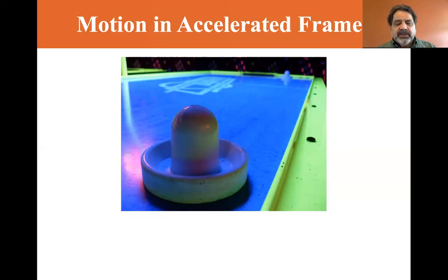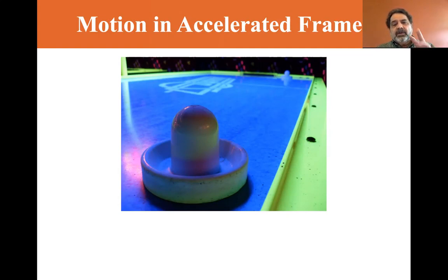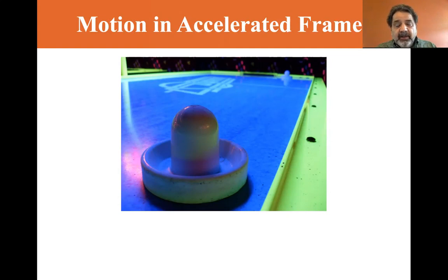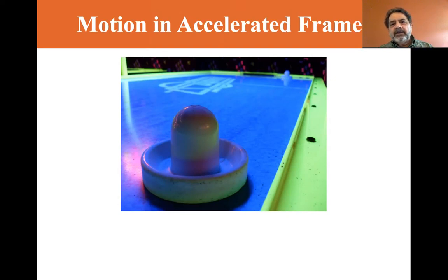We're looking at an air hockey table that's on a train, and when you're inside the train, that is your frame of reference. Under two conditions the hockey puck would appear to be stationary: when the train is stationary, or if the train is moving at a constant velocity — that is, zero acceleration. But if the train suddenly began to lurch forward and move in one direction, the hockey puck would appear to just suddenly move in the opposite direction.